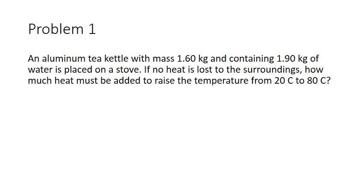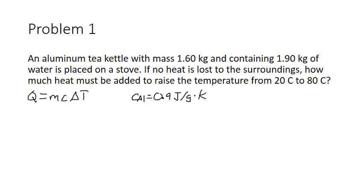A common problem you'll see is this one: an aluminum tea kettle with a mass of 1.6 kilograms containing 1.9 kilograms of water is placed on a stove. If no heat is lost to surroundings, how much heat must be added to raise the temperature from 20 to 80 degrees Celsius? We'll use q = mcΔT. The specific heat of aluminum is 0.9 joules per gram per kelvin.